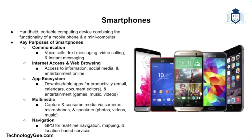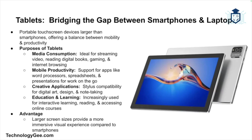Smartphones also have an app ecosystem, using app stores to download applications ranging from productivity tools like email, calendars, and document editors to entertainment like games, music, and videos. They support multimedia — equipped with cameras, speakers, and microphones for media capture and consumption. They also provide navigation via built-in GPS for mapping, real-time navigation, and location-based services. Essentially, smartphones serve as a multi-functional tool for communication, entertainment, productivity, and much more.